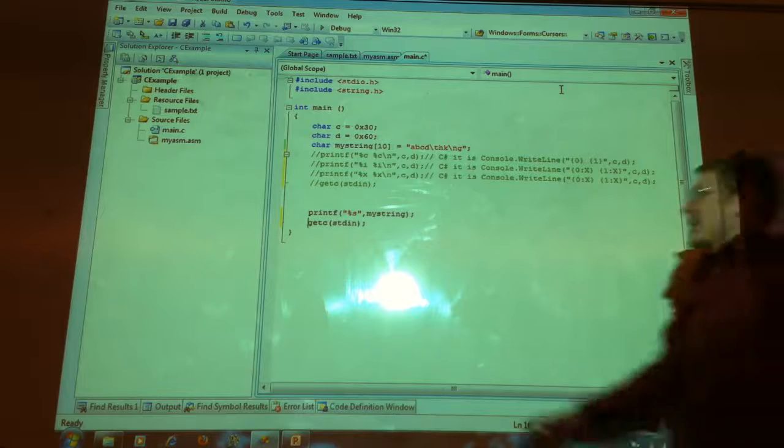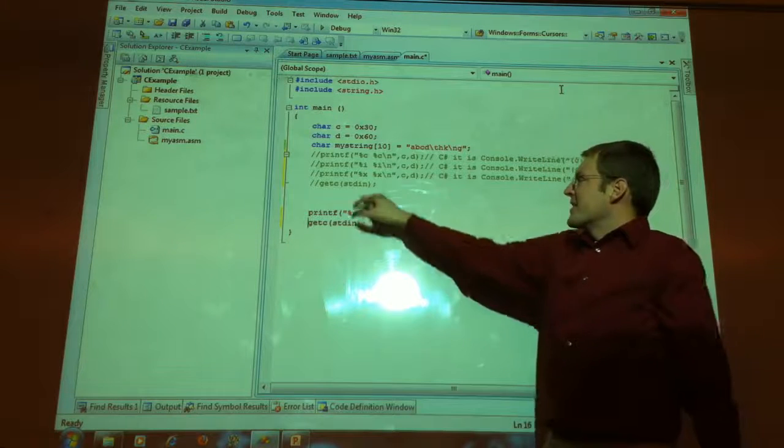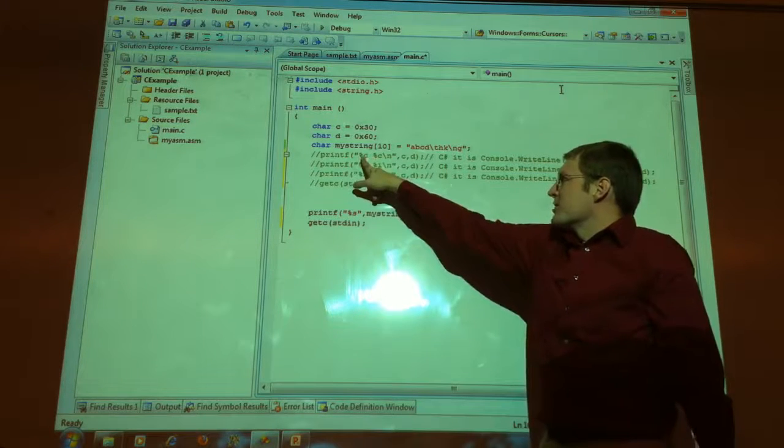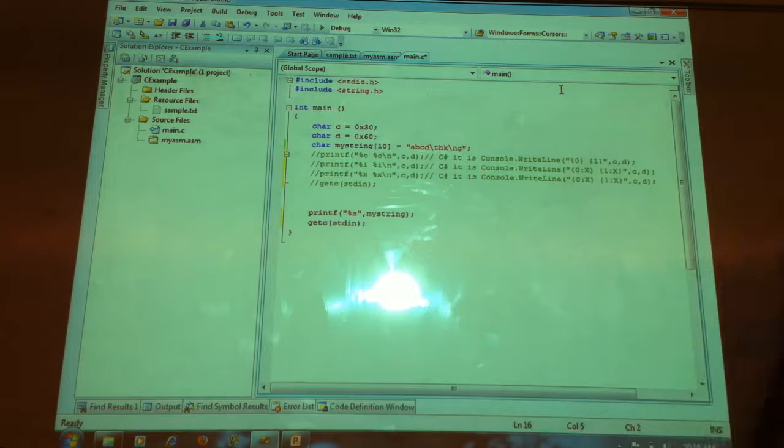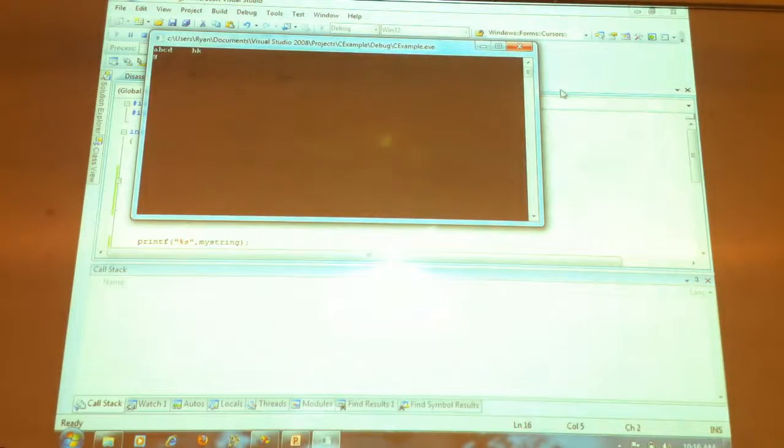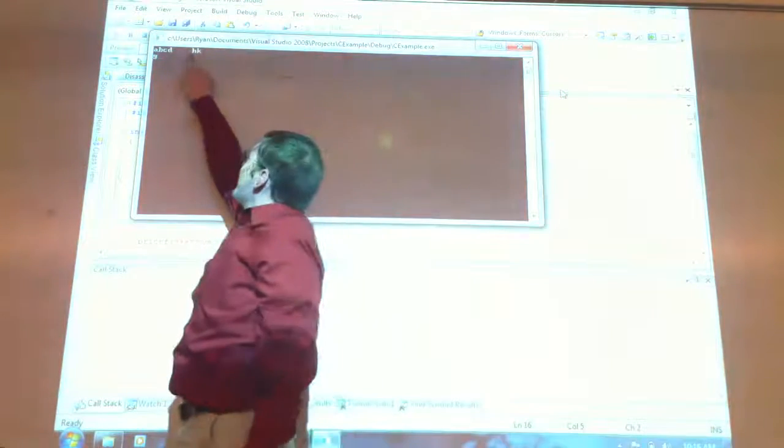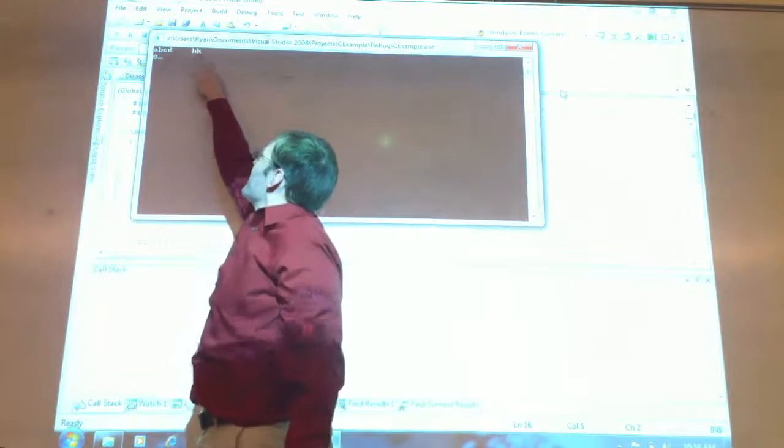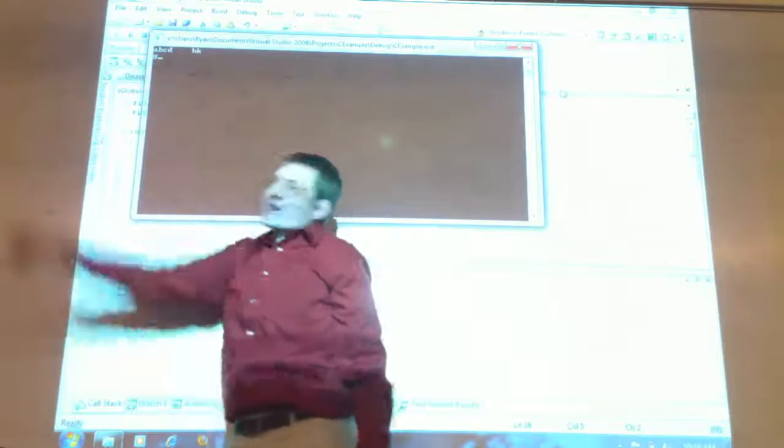And then print F. I had to change it to say, like I said, at C's up here. Say it prints a character. And then down below I tell it to say it's a string. So, print as a string. So, it pops up. I get A, B, C, D. You see, printed a tab. And then H, K, the new line here. The difference between G. Alright.